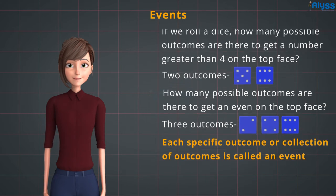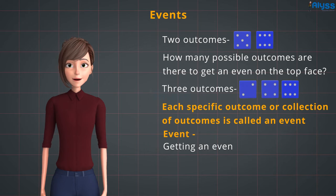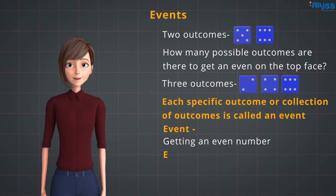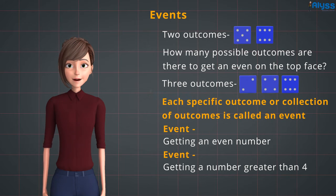Events. In the experiment of rolling a dice, getting an even number is an event, or getting a number greater than 4 is an event. Each specific outcome or collection of outcomes is called an event.